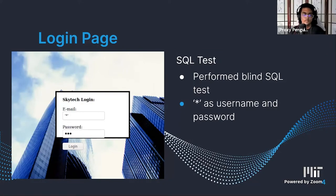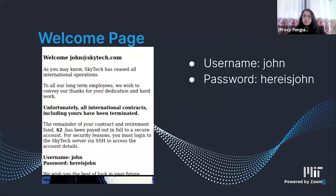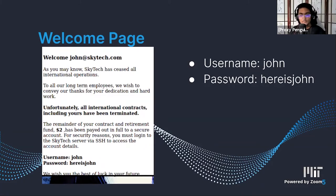We started off by trying an SQL injection. We performed a blind SQL test by putting in a pair of apostrophes with a multiplication operator or asterisk in between, used as both the username and password. This is a very basic SQL injection, but surprisingly it worked. After executing the SQL injection and getting past the login screen, we got a welcome page that said for security reasons we must log into the SkyTech server via SSH to access the account details.